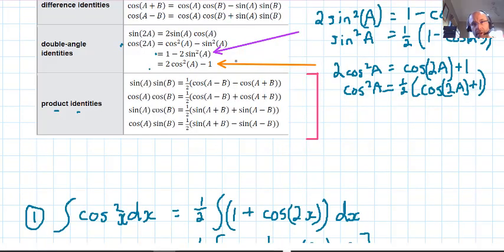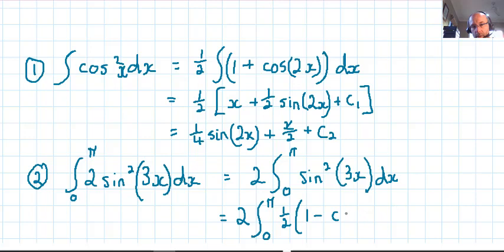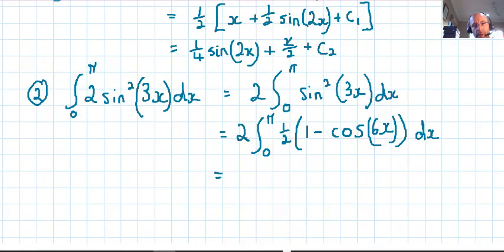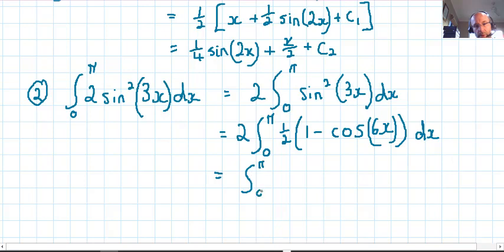Now using our purple identity there with the purple arrow, so sin²A = a half outside of (1 - cos 2A). Now if A is 3x, 2A is 6x, double that real value there. Okay, so again that half can go outside the integral, so we have 2 times a half which is just one. So we just have the integral from zero to pi of (1 - cos 6x), which is not so tough, dx.